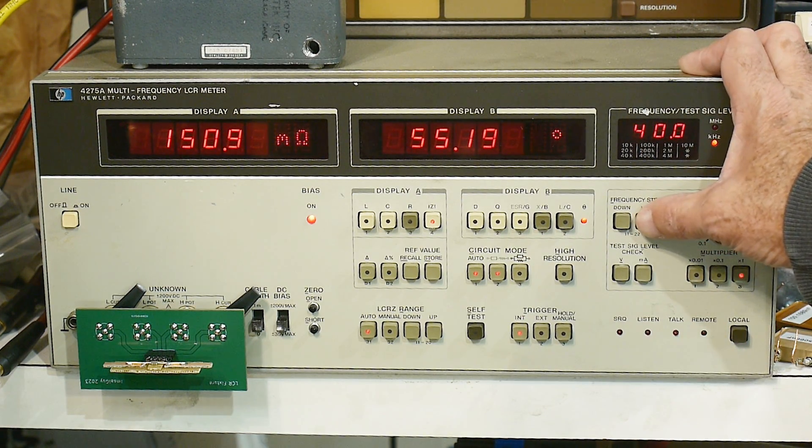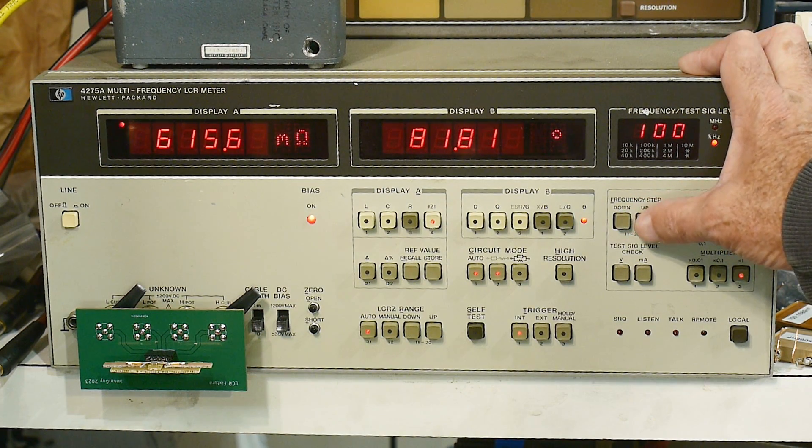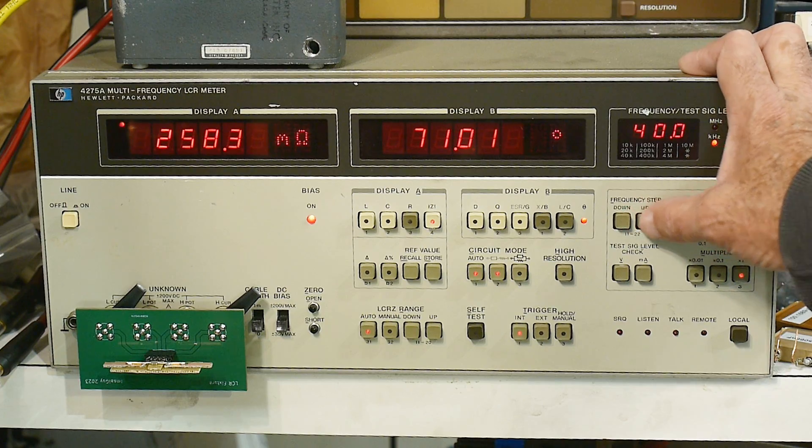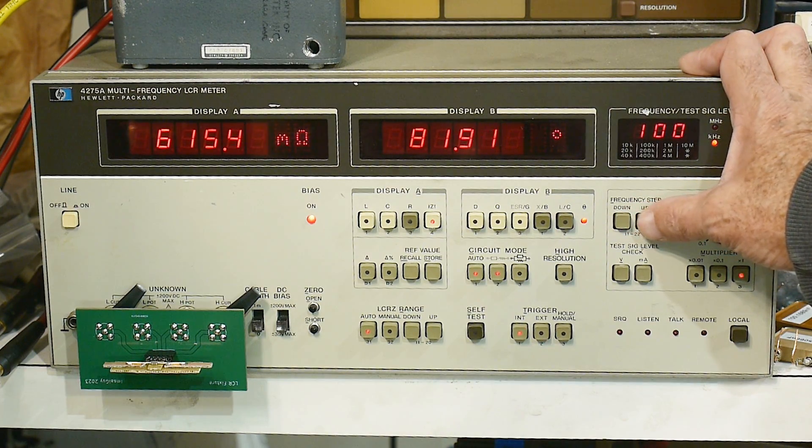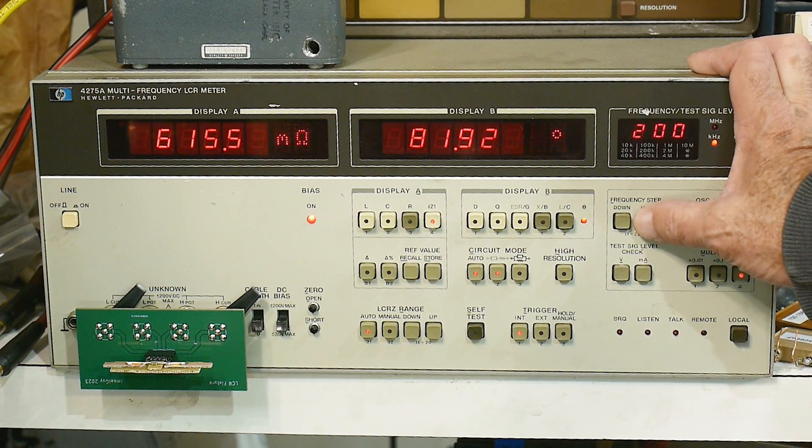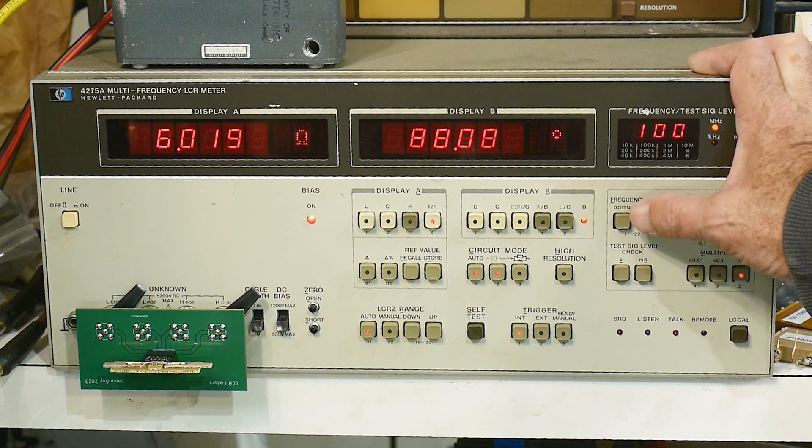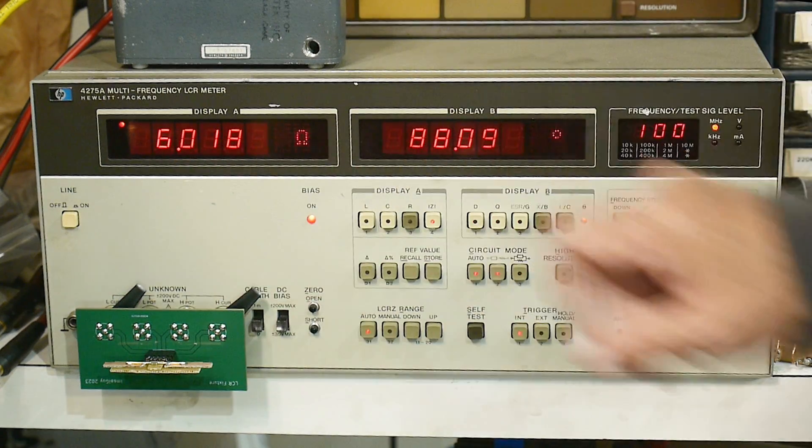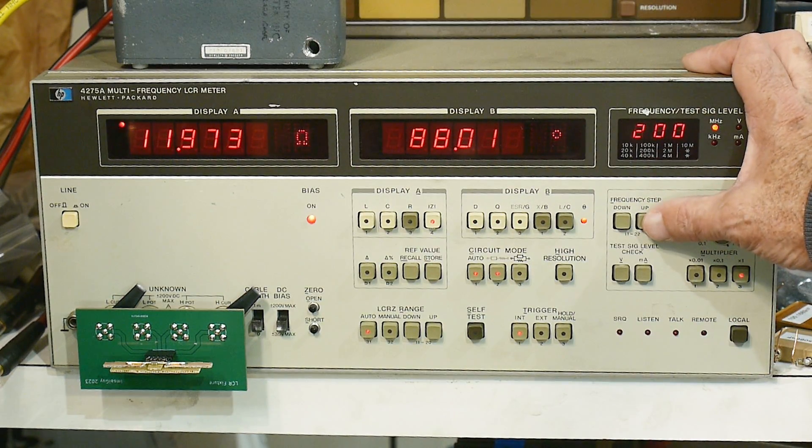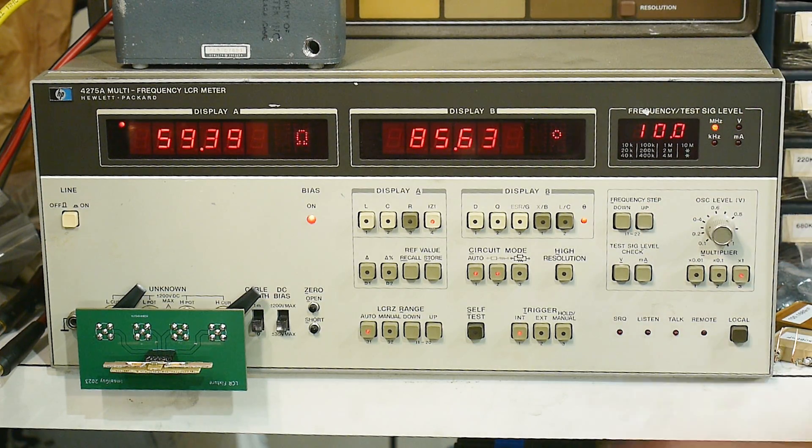20 kilohertz, 40, 100. So at 100 kilohertz we're up to 0.6 ohms. 200, 400, 1 megahertz we're at 6 ohms, 2 megahertz, 4 megahertz, and 10 megahertz. At 10 megahertz it's 59 ohms.